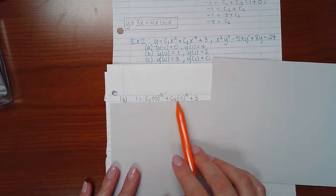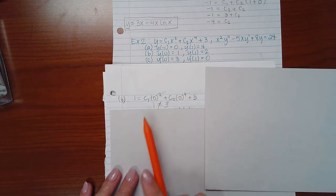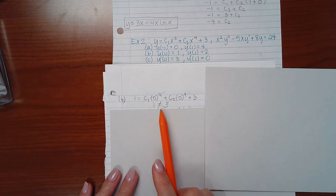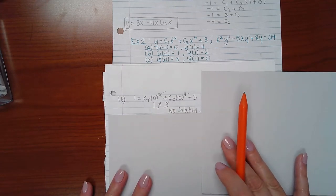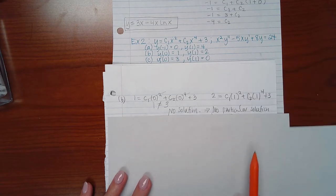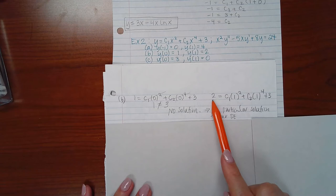Well, that means this term is going to go to 0 and this term is going to go to 0, which means I end up with the statement 1 equals 3. But 1 does not equal 3, which means I have the same situation as before, no solution. Therefore, there's no particular solution to our DE.